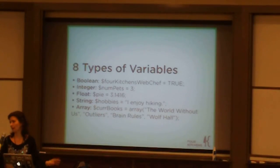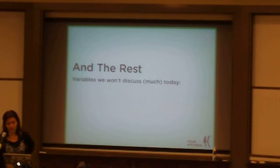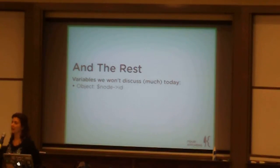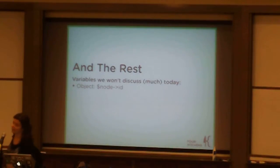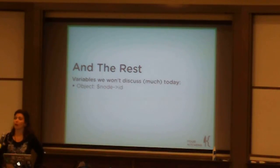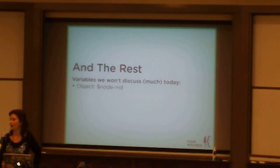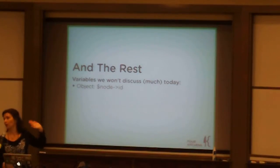The remaining variable types we won't discuss much today. An object is one you will see a lot in Drupal — for example, a node object has everything the node is going to display: the date, the created date, the text of the node, pretty much everything associated with it. The way you access a property like the node ID is with the arrow syntax. You'll see this a lot in Drupal code — it's object-oriented programming, and from looking at it, you can see what node ID means.